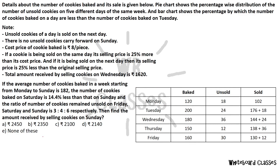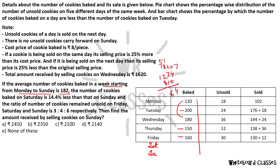Next question: if the average number of cookies baked in a week from Monday to Sunday is 182, then the total for 7 days is 182 × 7 = 1274. We already have the sum of Monday through Friday and Saturday values, so we can find Sunday's baking quantity by subtracting the known totals: 1274 − (sum of Mon–Sat) = cookies baked on Sunday.